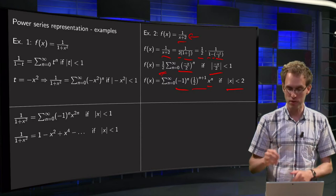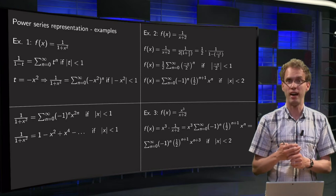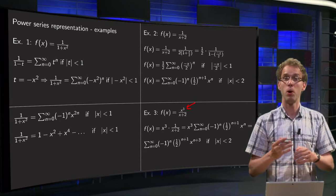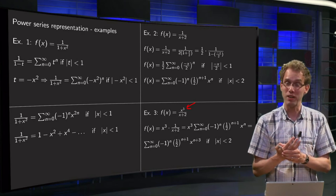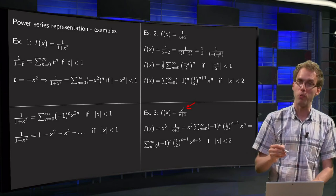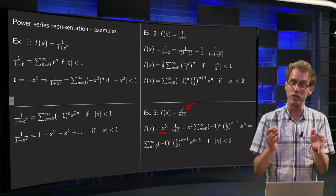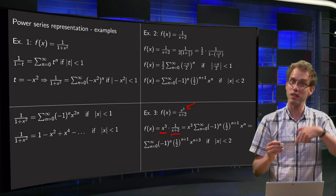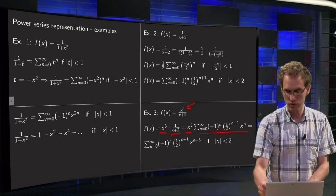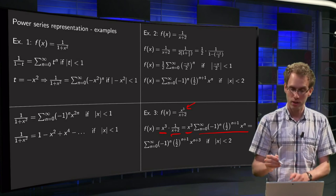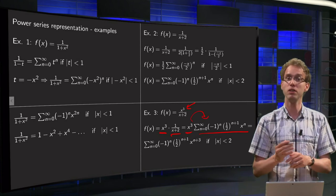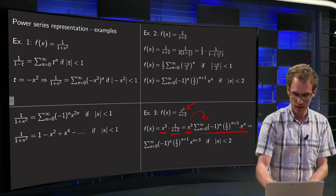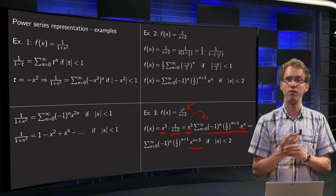There we have our next power series. The third example looks like the previous one, but now we have an additional factor of x cubed. Is that a problem? Not at all. We are expressing our function in terms of powers of x, and x cubed is also a power of x. So f of x equals some power of x times the other function. We already know the second function from the second example. So we get x cubed times the function we already had. We can take x cubed inside the summation because it does not depend on n, so x cubed times x to the power n gives x to the power n plus 3. And there we have our third power series.